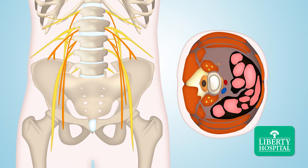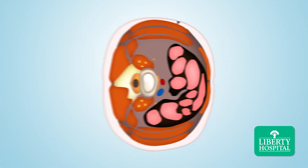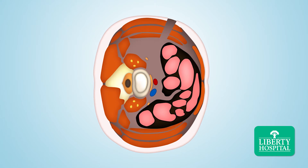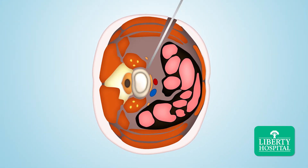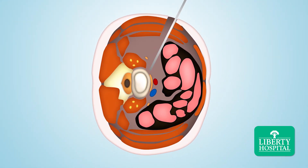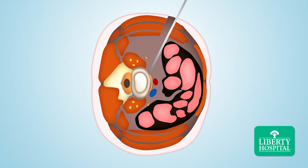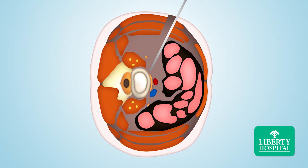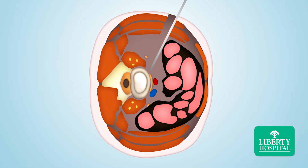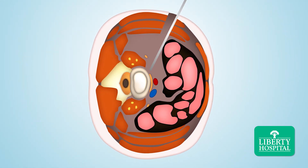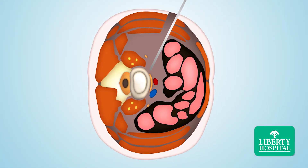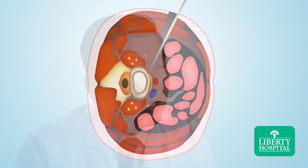This reduces risk of thigh weakness and numbness. The OLIF procedure also avoids harming major vessels by going behind the intestine, and allows for a greater degree of correction options and a larger surface area to promote spinal fusion.